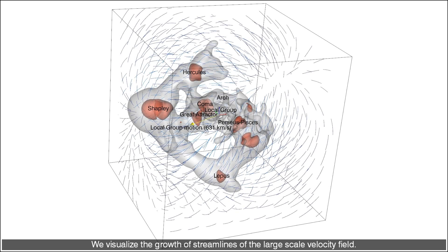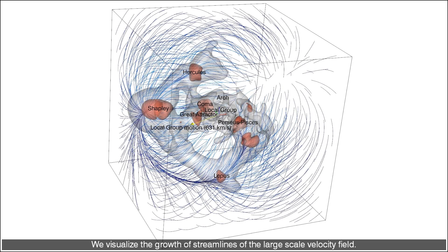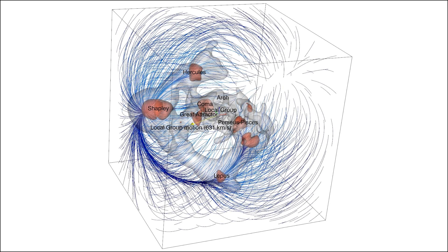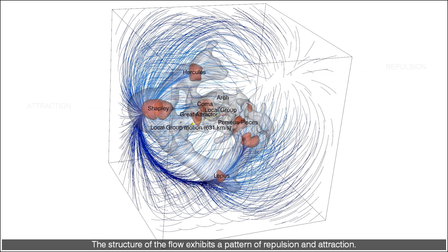We visualize the growth of streamlines of the large scale velocity field. The structure of the flow exhibits a pattern of repulsion and attraction. Mass elements travel a typical distance of roughly 1000 km per second along flow lines.